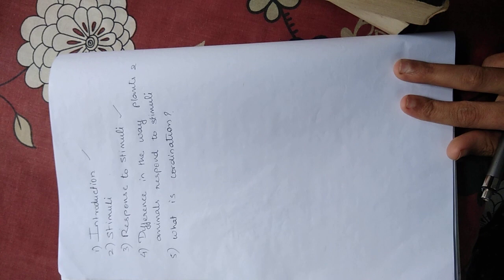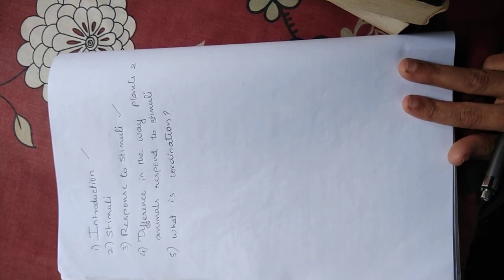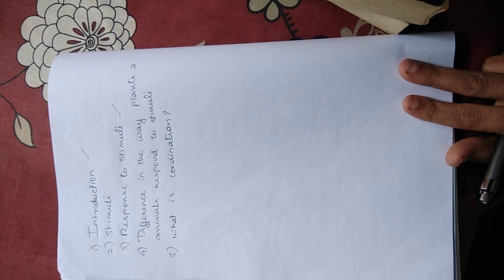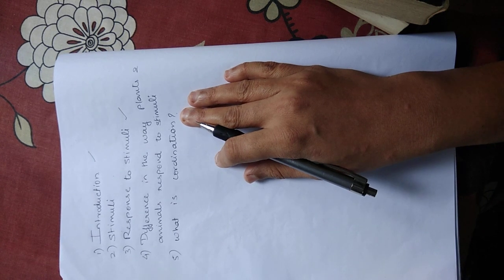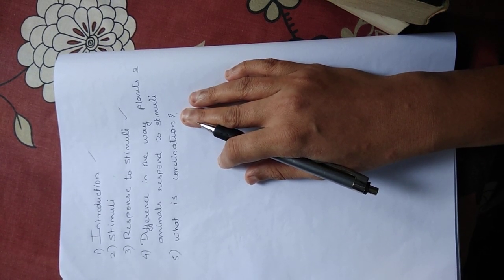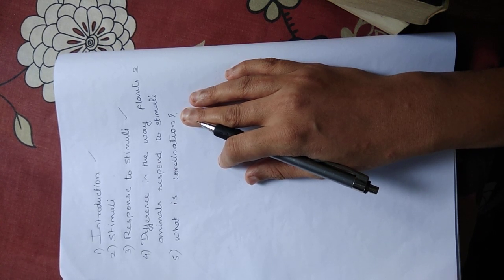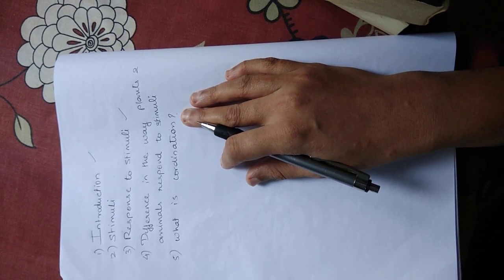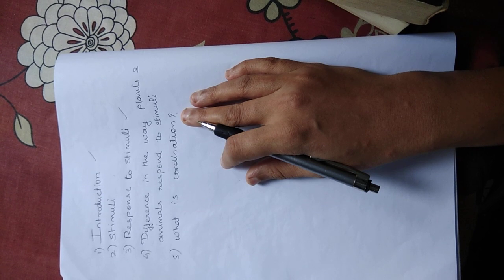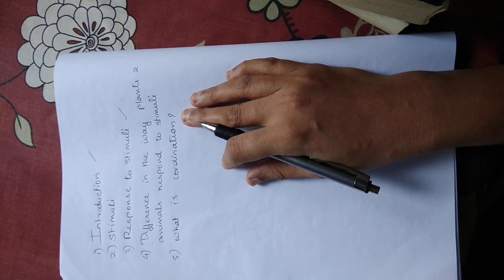Coming to the introduction, there are a lot of things happening in our surroundings. Sunlight falls onto a seed, we water it, and a small plant grows. The sunflower turns towards the sunlight. For human beings, your mother calls you, you hear that sound and wake up. You get thirsty — that is an internal stimulus, something happening inside you which makes you do something. Externally, your mother calls you and you respond to it.